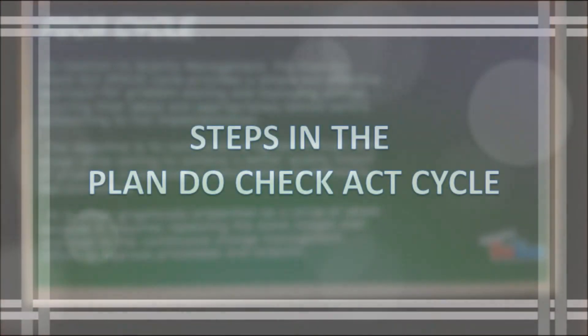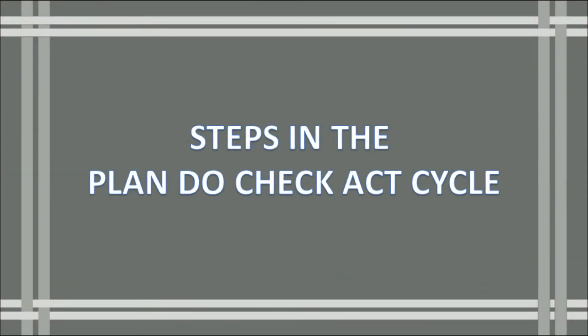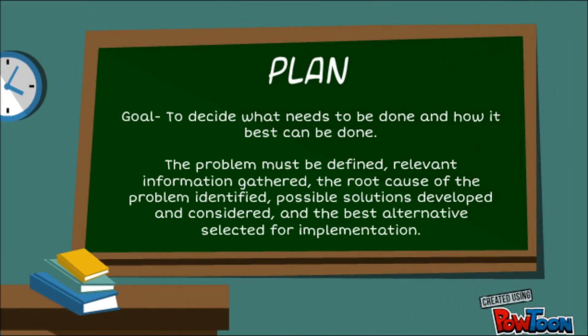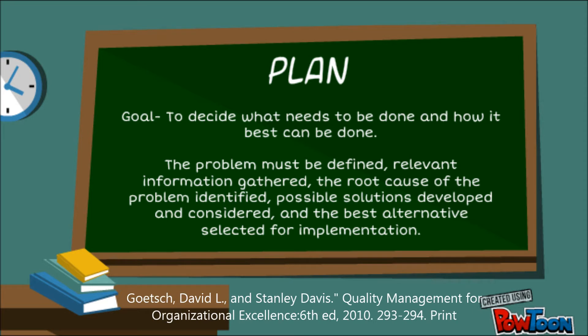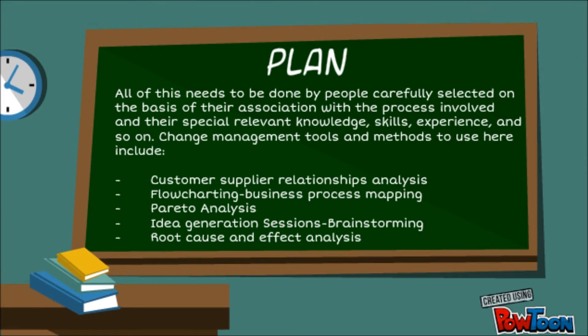So how exactly do we use this PDCA cycle? Well, there are four steps. The first stage in the PDCA cycle is to Plan. The goal at this stage is to decide what needs to be done and how it best can be done. The problem must be defined, relevant information gathered, the root cause of the problem identified, possible solutions developed and considered, and the best alternatives selected for implementation. All of this needs to be done by people carefully selected on the basis of their association with the process involved and their relevant knowledge, skills, experience, and so on.